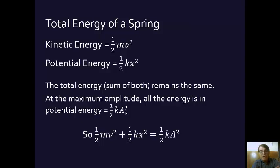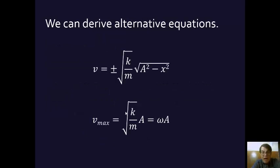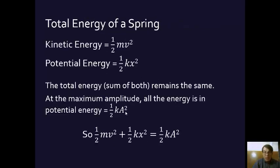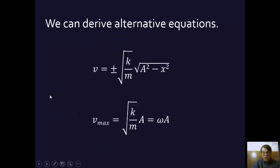Knowing this helps us solve for the velocity when we don't know the time. People a lot smarter than me basically took this equation and solved for v squared, then took the square root of it to get v, and they were left with this equation here.